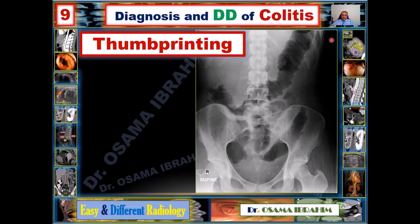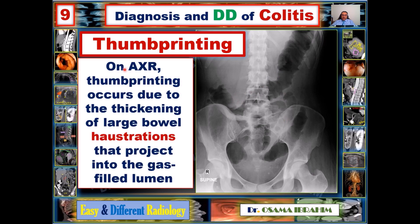The main focus of this presentation is the thumb printing sign. Looking at this abdominal X-ray, you can find thumb printing appearing in the transverse colon. Thumb printing occurs due to thickening of the large bowel haustra that project into the gas-filled lumen. When the haustra are thickened and appear depressed inside the gas-filled colon lumen, they produce the thumb printing sign.